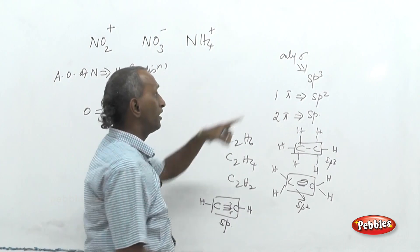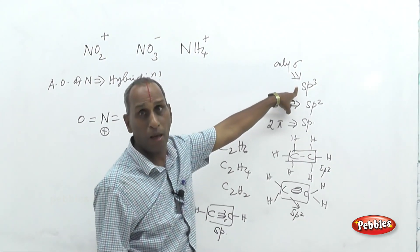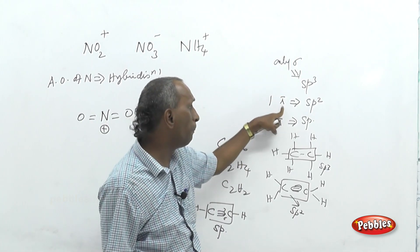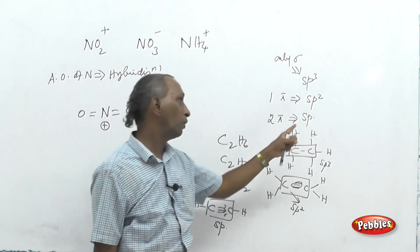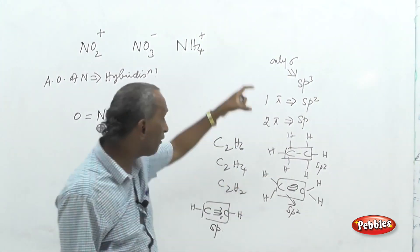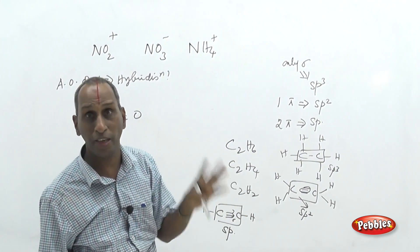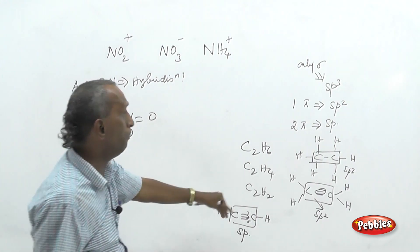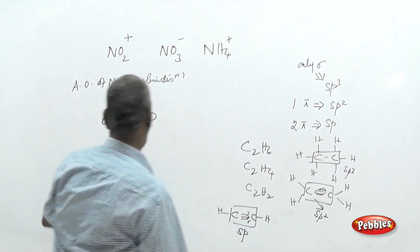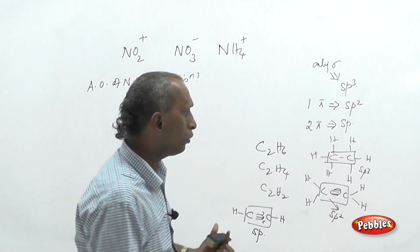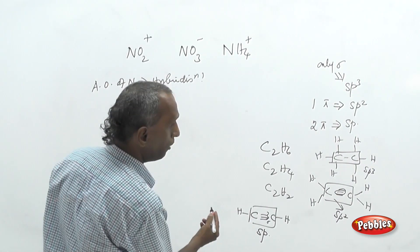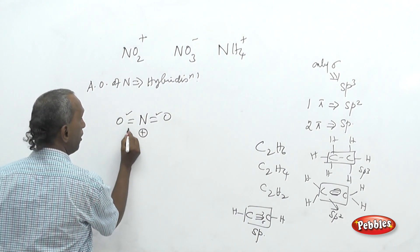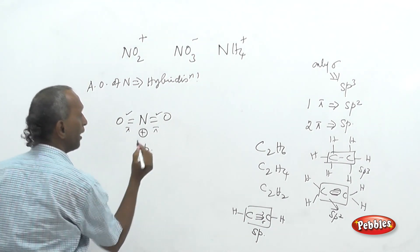Applying this to nitrogen species: NO₂⁺ contains two double bonds, meaning two pi bonds — therefore SP hybridization. The same logic applies: two pi bonds means SP hybridization. For the nitrate anion NO₃⁻, the structure has one double bond and two single bonds to oxygen — containing only one pi bond, which means SP2 hybridization.